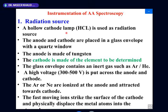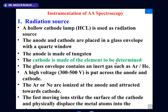In the hollow cathode lamp, there is a bulb with two electrodes: an anode and a cathode. Both electrodes are placed inside glass sealed with a transparent quartz window. The anode is made of tungsten, and the cathode is made of the element to be determined. This is the speciality of the hollow cathode lamp.